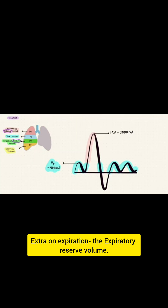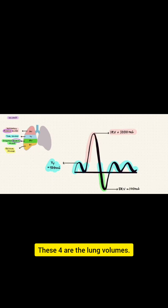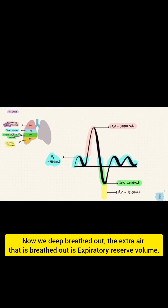So to recap the four lung volumes: the quiet breath is tidal volume; the extra air on inspiration is the inspiratory reserve volume; the extra air breathed out on deep expiration is the expiratory reserve volume; and the air left behind is the residual volume.